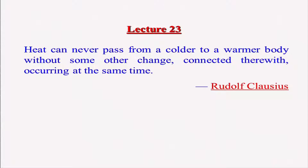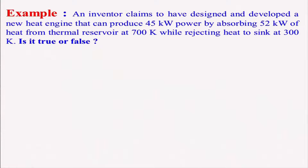We will now take up an example to see how you can apply the Carnot corollary and solve a problem. This example is related to a claim made by an inventor. An inventor claims to have designed and developed a new heat engine that can produce 45 kilowatt of power by absorbing 52 kilowatt of heat from a thermal reservoir at 700 Kelvin while rejecting heat to the sink at 300 Kelvin. We need to determine whether this claim is true or false.